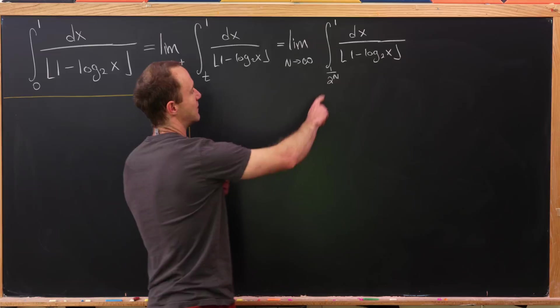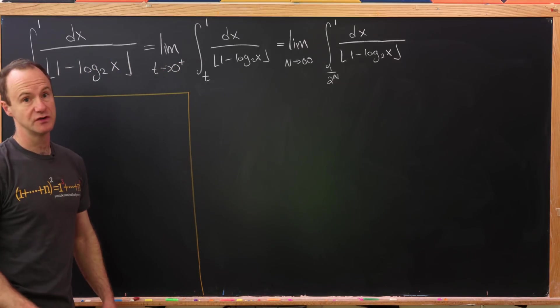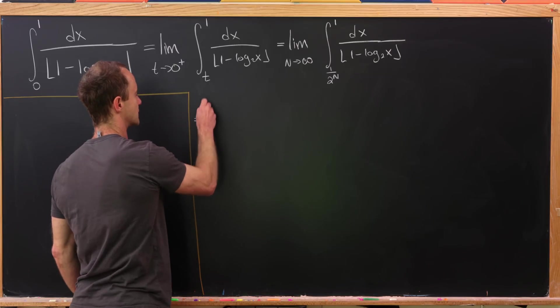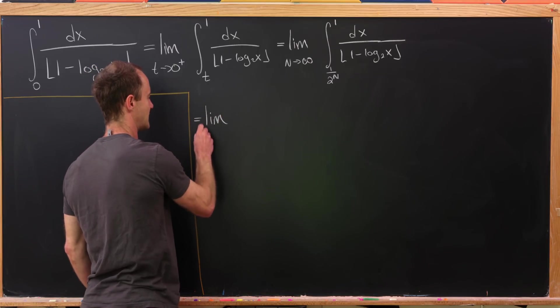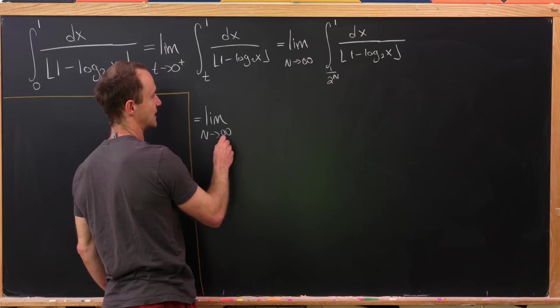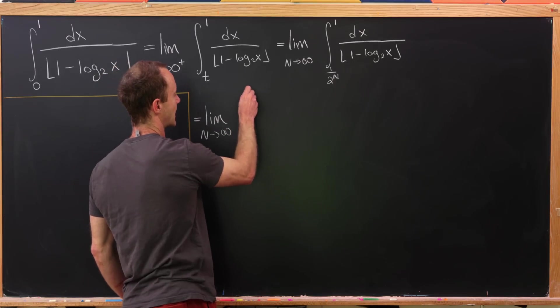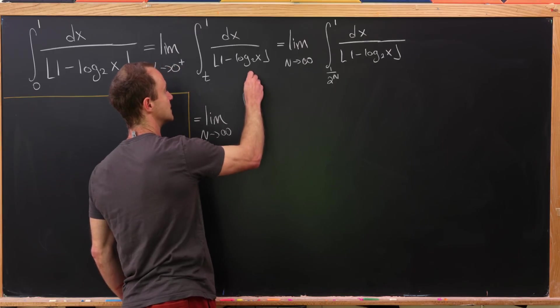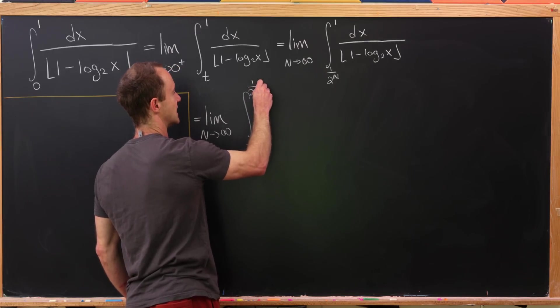And so what integrals will those be? Well, we're going to start way down here at the bottom, 1 over 2 to the n, and work all the way up to 1. So in other words, we'll have the limit as n goes to infinity.